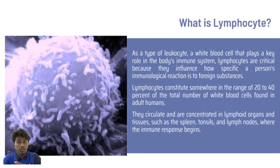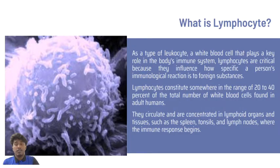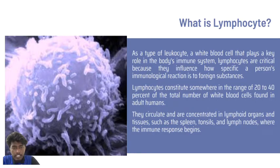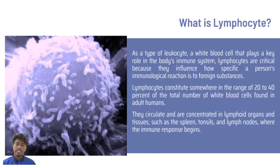Before we go to positive and negative selection of T-lymphocytes, we need to know the introduction of what a lymphocyte is. It's a type of white blood cell that plays a key role in the body's immune system. Lymphocytes are critical because they influence how specific a person's immunological reaction is to a foreign substance. Lymphocytes constitute somewhere in the range of 20–40% of the total number of white blood cells in the adult human and are concentrated in the lymphoid organs and tissues, such as the spleen, thymus, and lymph nodes where the immune response begins.